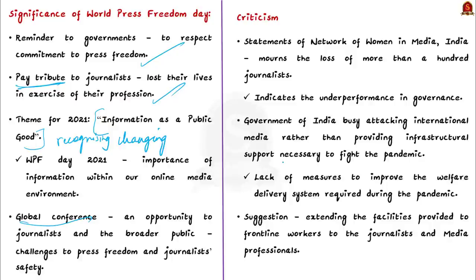The author cites an important statement released by the Network of Women in Media India — an informal association that emerged through a participatory process built upon initiatives by media women in different parts of the country, which promotes ethics, responsibility, and social consciousness within the media. This network's statement mentioned journalists as the unacknowledged and unsung messengers exposing the disintegration of basic healthcare facilities during the pandemic, and talked about the loss of more than 100 journalists in India over the past year.